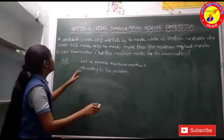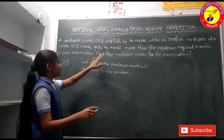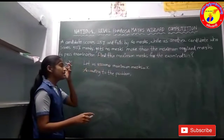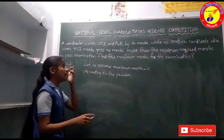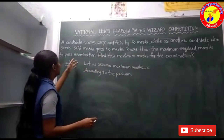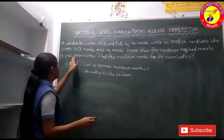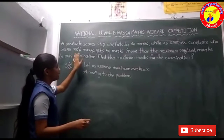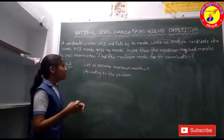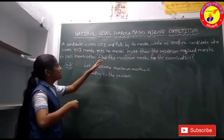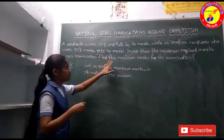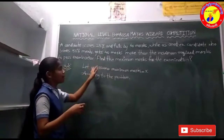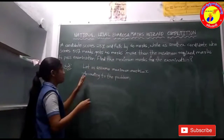So here, the first candidate scores 25% and fails by 60 marks, and the second candidate scores 50% marks and got 40 marks more than the required marks. They are asking for the maximum marks.